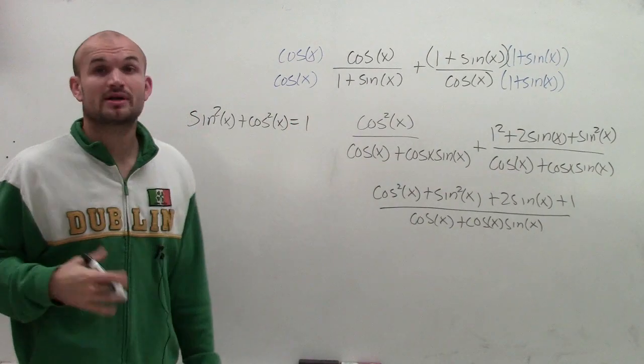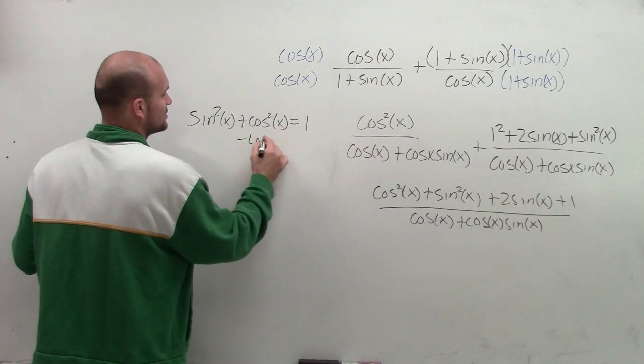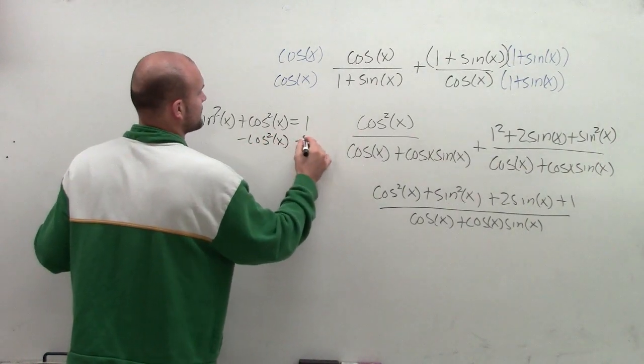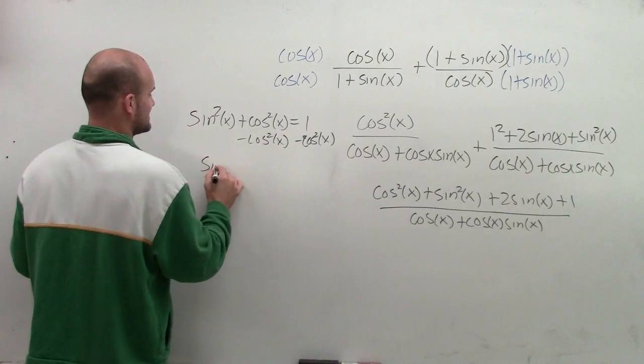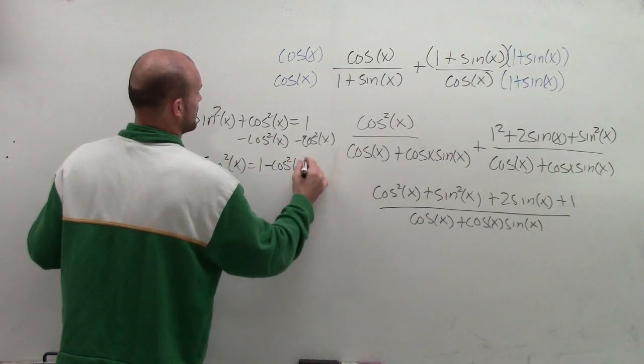So sine squared plus cosine squared equals 1. So therefore, let's solve for sine squared. So I'll subtract cosine squared of x on both sides. Therefore, I get sine squared of x equals 1 minus cosine squared of x.